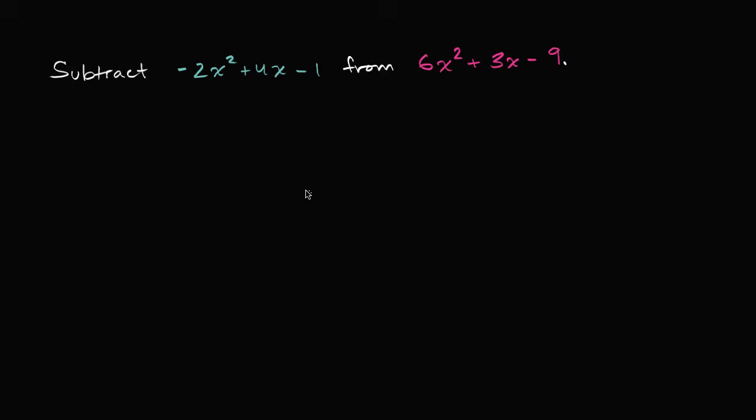All right, now let's work through this together. So I could rewrite this as 6x squared plus 3x minus 9, minus this expression right over here. So I'll put that in parentheses: minus negative 2x squared plus 4x minus 1.